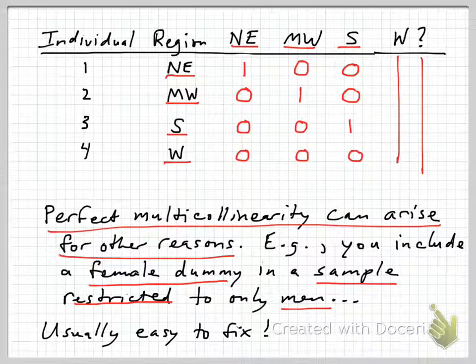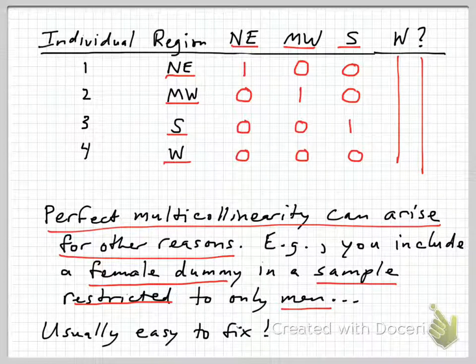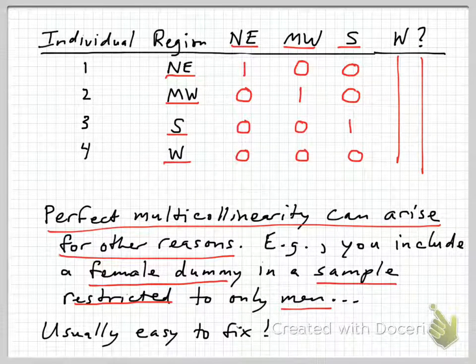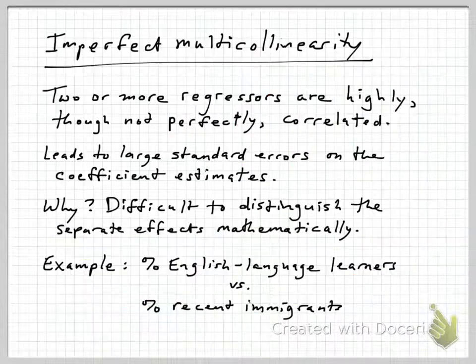Usually these problems are easy to fix, although sometimes they're not so obvious. In this case, we would just drop the female dummy out of that regression since we're only looking at men.